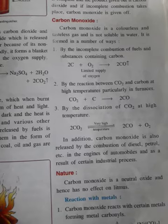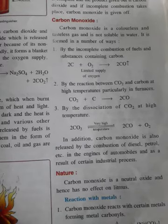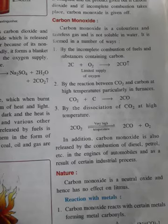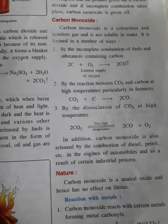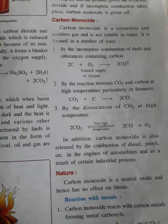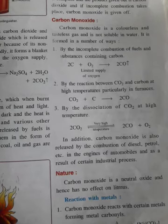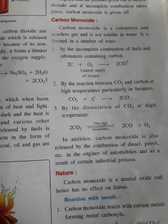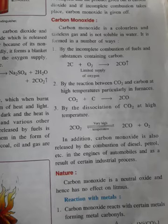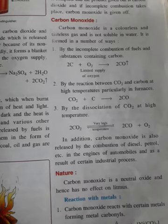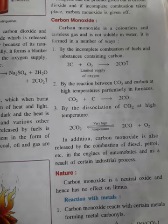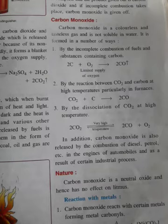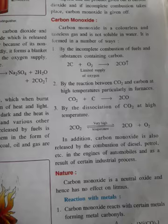It is a silent killer as it is colorless — if any leakage occurs or an atmosphere of carbon monoxide is present, we cannot detect it. A high concentration of carbon monoxide will also affect plants, causing leaf drop, reduction in leaf size, and premature aging. These are the harmful effects of carbon monoxide.